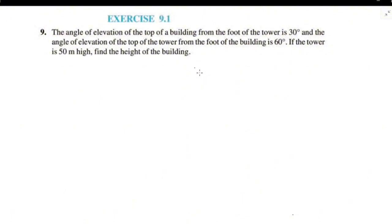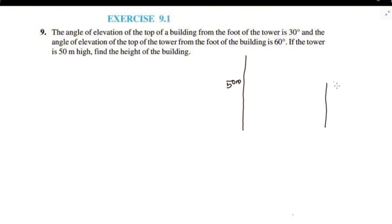We have a tower and a building. This is the tower, and its height is 50 meters. This is the building. The points are labeled A, B, C, D. This is the ground.